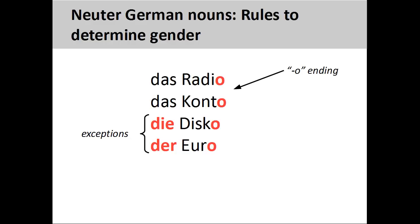Many nouns ending in -o, such as Radio meaning radio, and Konto meaning bank account, will be neuter, although it is important to note that there are numerous exceptions. Disco meaning discotheque, and Euro meaning the euro currency, are examples of exceptions.